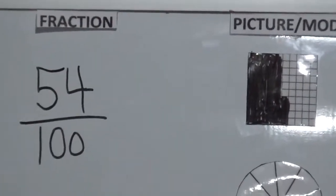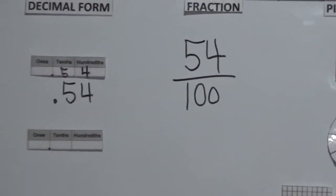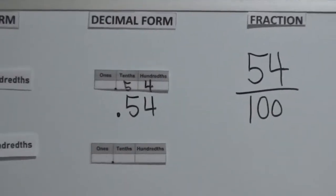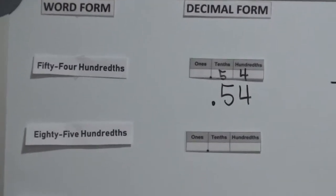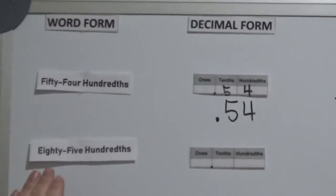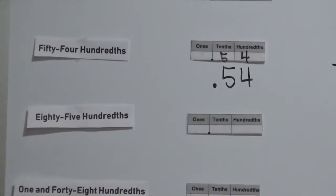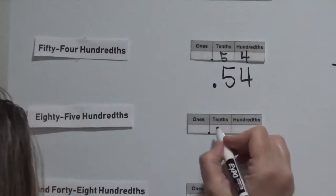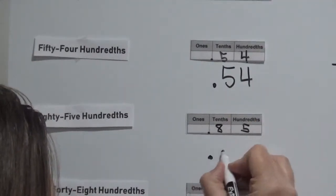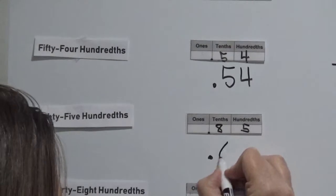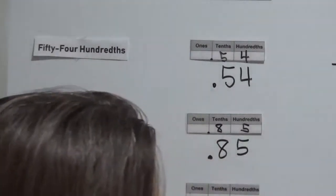If you want to pause the video, try the next one on your own, and then check it. But I'm going to go ahead and move on. The word form of the next one is eighty-five hundredths, so the decimal form is 0.85. It should look like eight dimes and five pennies, or eighty-five pennies.